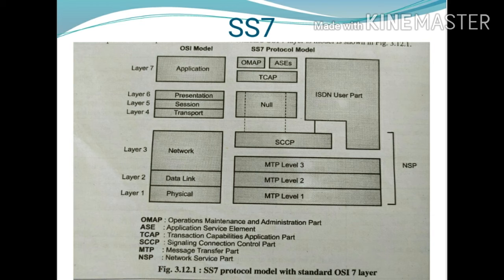MTP Level 2 represents the second layer of the OSI reference model and provides a reliable link for the transfer of traffic between two directly connected signaling points. It defines a variable packet length for this layer and carries out tasks like error detection and correction using a 16-bit Cyclic Redundancy Check (CRC) technique. It also provides data flow control between two different points.